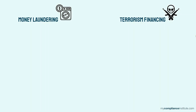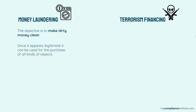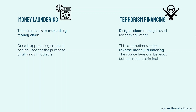The last difference between money laundering and terrorist financing is that for money laundering the objective is to make dirty money clean. Once it appears legitimate, it can be used for the purchase of all kinds of objects, such as luxury objects or real estate. As far as terrorism financing is concerned, dirty or clean money is used for criminal intent, which is a future terrorist attack. This is sometimes called reverse money laundering — the source of money can be legal, but the intent is criminal.